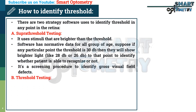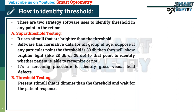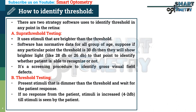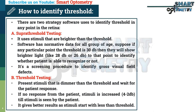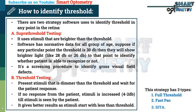Strategy B is threshold testing. In threshold testing, the software presents stimuli that are dimmer than the threshold and waits for the patient's response. If there is no response from the patient, the stimulus is increased generally by 4 to 2 decibels until the stimulus is seen by the patient. It gives better results as stimuli start below the threshold. This strategy has three types: 1. Full threshold, 2. Fast pack, and 3. SITA.